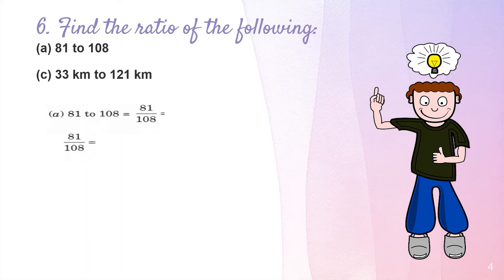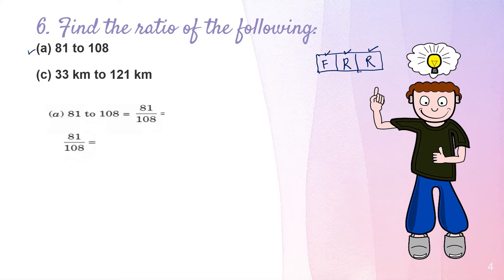Let's do the next question: find the ratio of 81 to 108. I'll take two parts of this question; you can do the remaining two yourself. As we've learned, there are three steps when finding the ratio of two numbers: first, change the question into fraction form; second, reduce it; third, write the final answer in ratio form — fraction, reduce, ratio, or FRR.